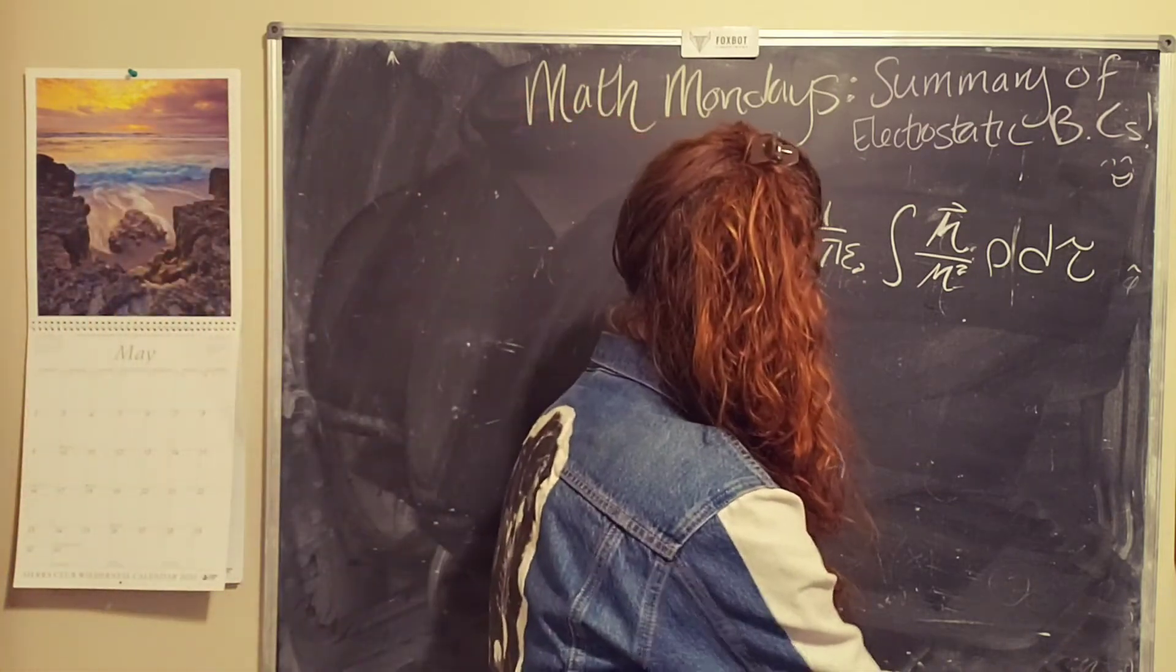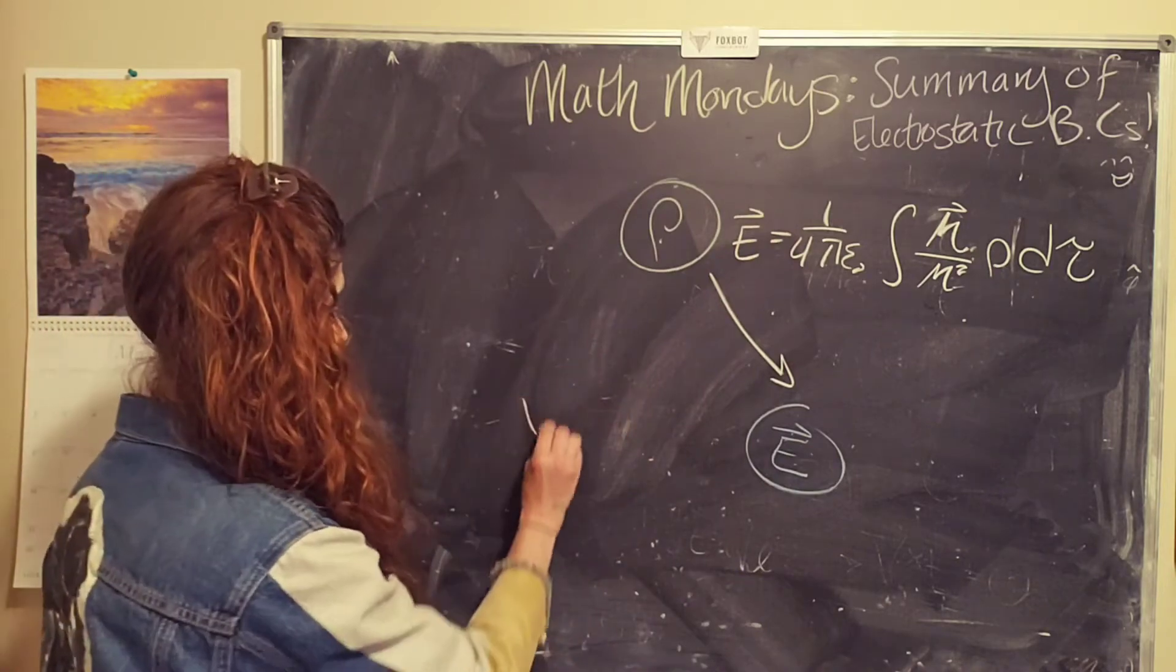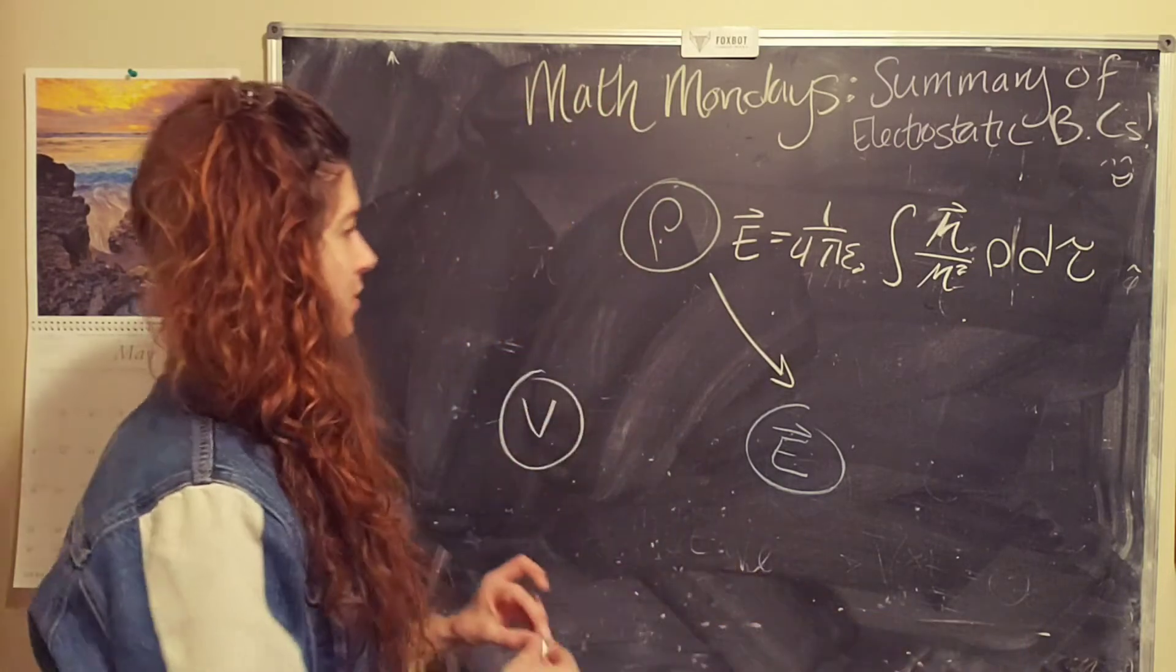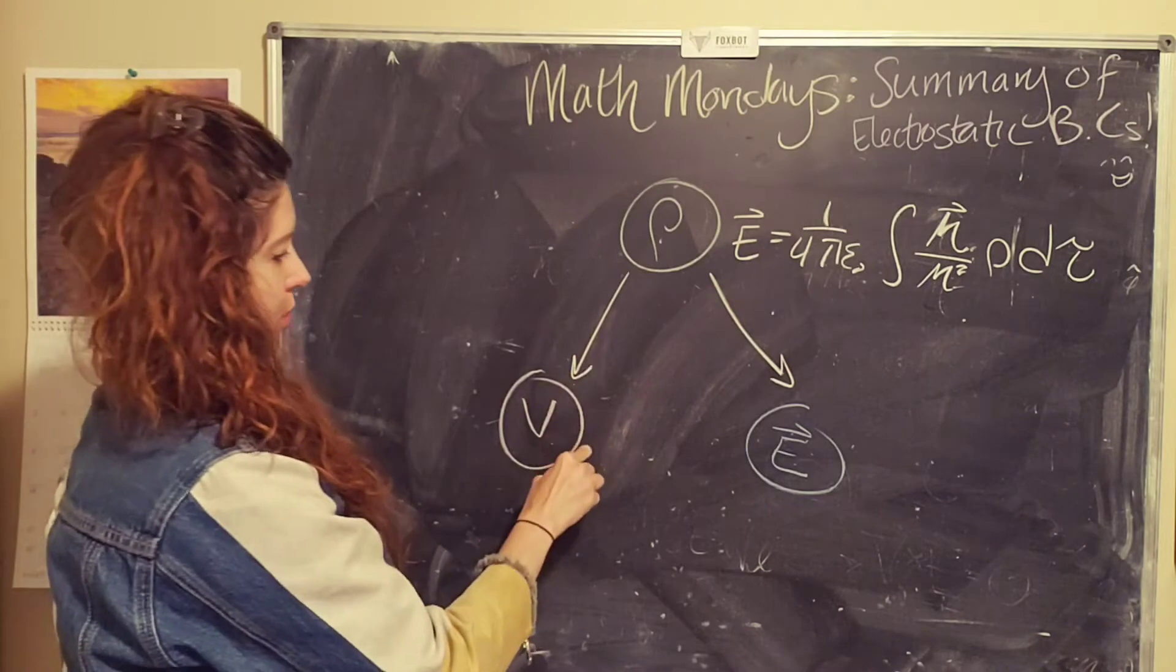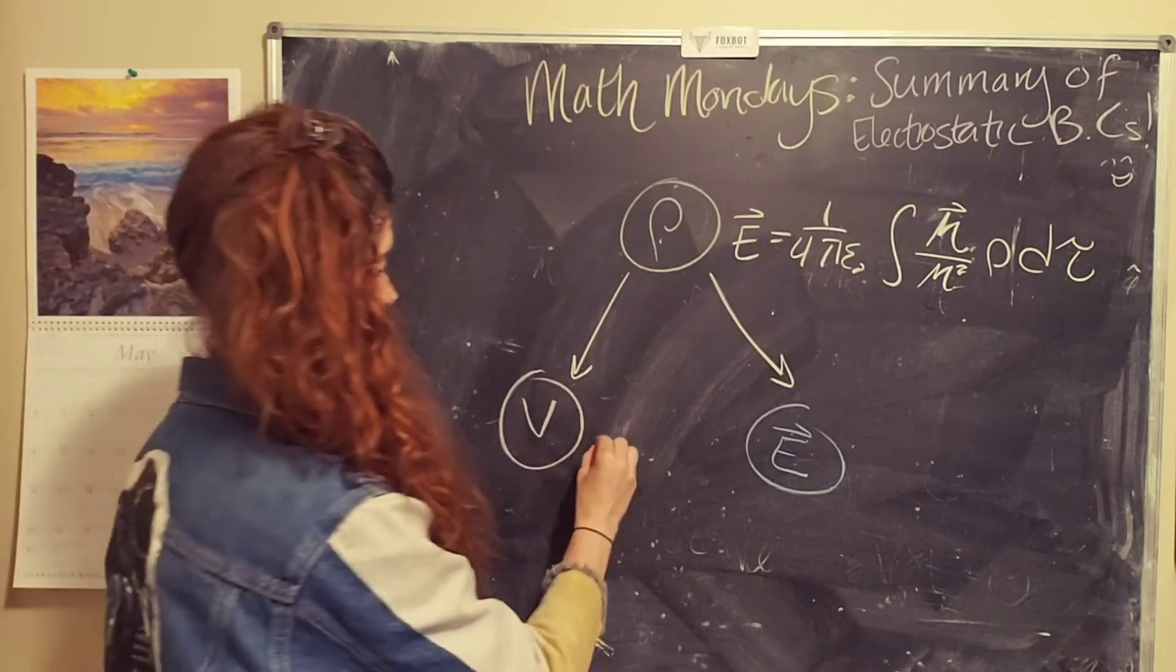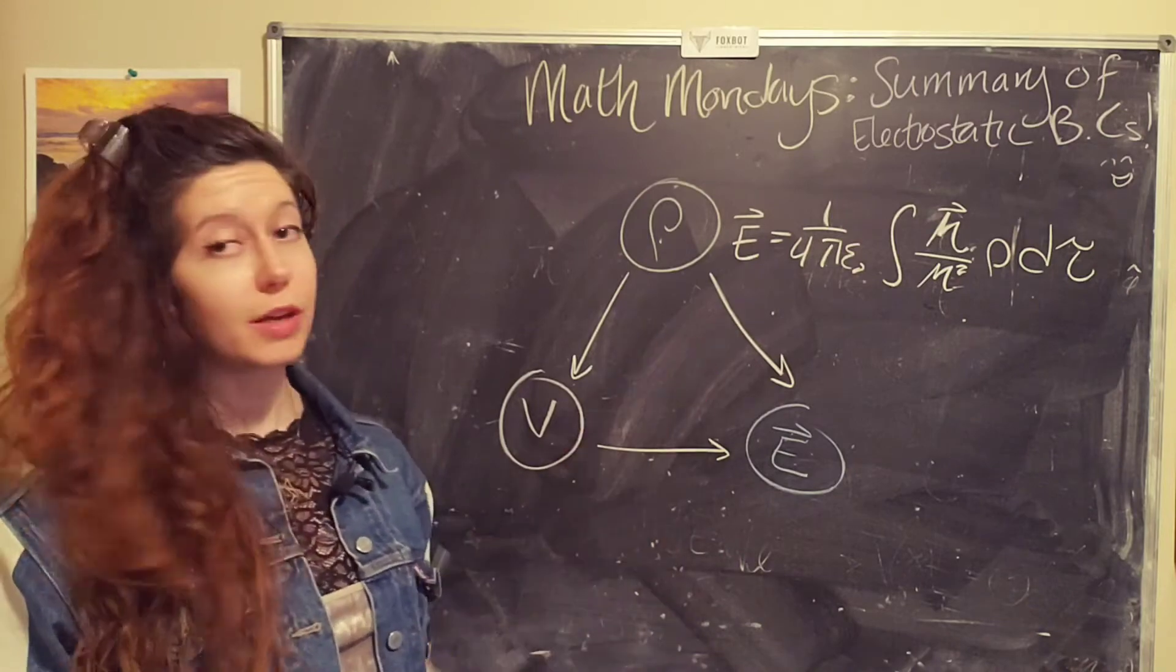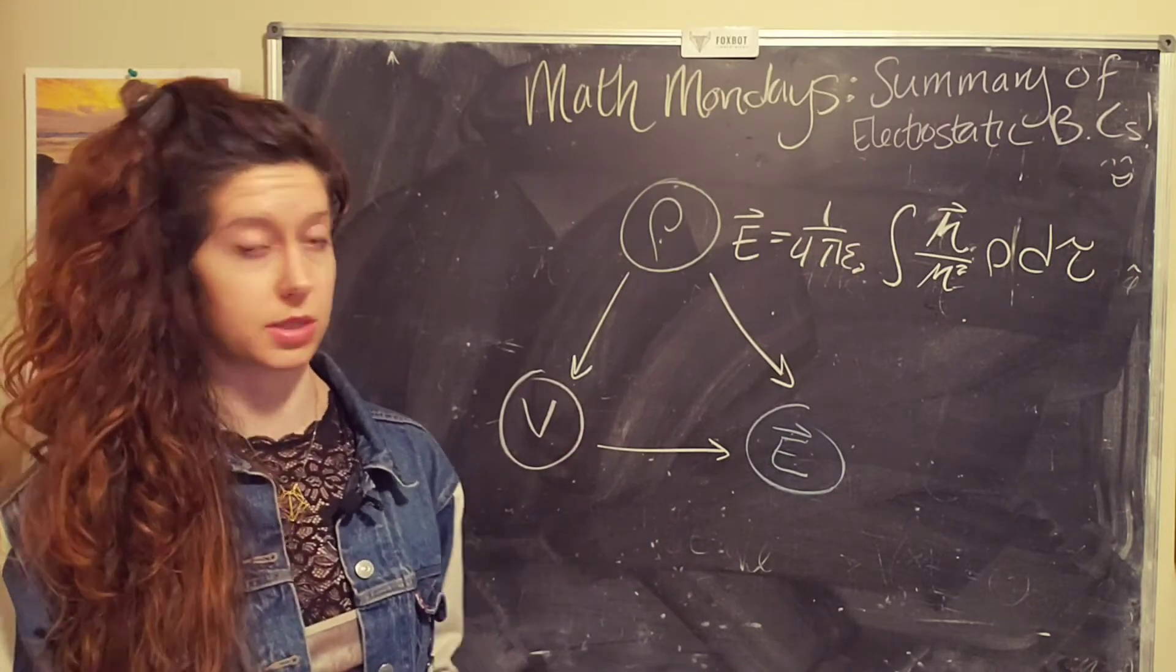So sometimes an easier approach is to be like, you know what, I'm going to take a detour and I'm going to find the electric potential instead. So you can often go from the charge distribution, find the electric potential, and get to the electric field, especially if you aren't dealing with symmetry that allows you to use Gauss's law.